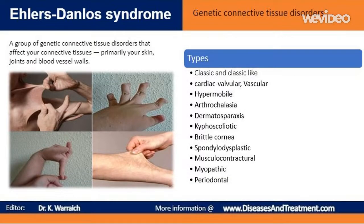Recently, 13 major types of Ehlers-Danlos syndrome have been subtyped. These include Classic, Classic-like, Cardiac valvular, Vascular, Hypermobile, Arthrokalasia, Dermatosparaxis, Kyphoscoleotic, Brittle cornea, Spondylodysplastic, Muscular contractual, Myopathic, and Periodontal. Each type of EDS affects different areas of the body.